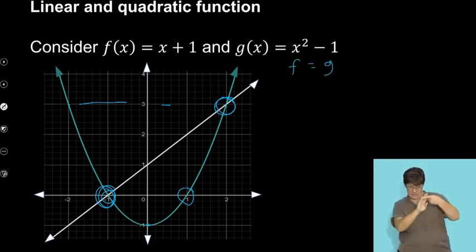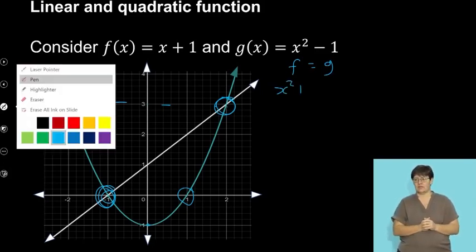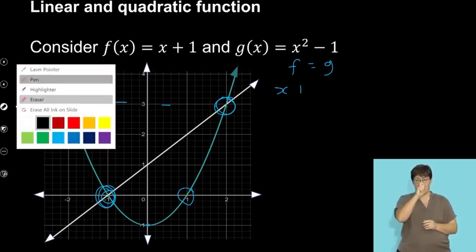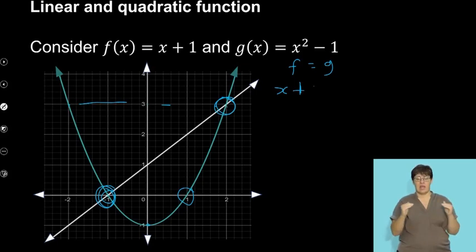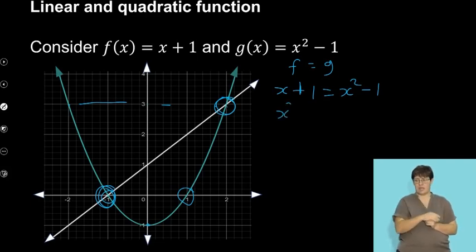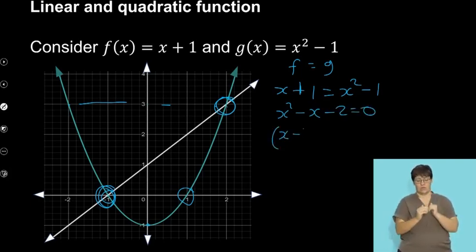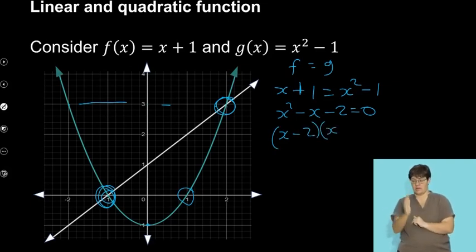Remember that. And that will be X plus 1 equals to X squared minus 1. You solve this, guys. This becomes X squared minus X and then minus 2 equal to 0. You solve this. It will be X minus 2X plus 1 using factorization.